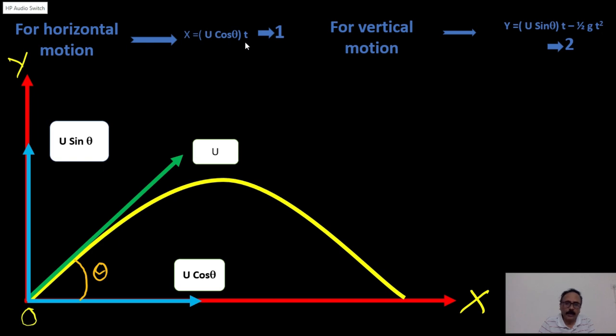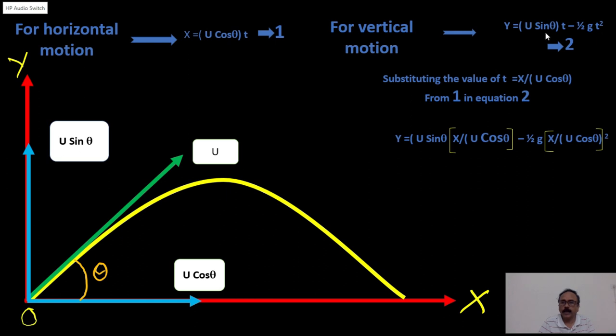Now, let us take the value of t from the first equation and then substitute in the second one. The value of t from the first equation is x by u cos theta. Now, let us substitute in the second equation. Here, the second equation shows that u sin theta into t. In place of t, I have substituted x by u cos theta and minus half g t square. Again, x by u cos theta whole square. I can cancel out this u and this u and then sin theta by cos theta is resulting as tan theta and this x will come here and this is half g. When you squared it, x square divided by u square cos square theta.